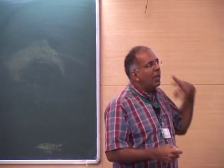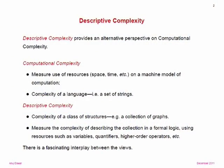In descriptive complexity we depart on two fronts. Instead of talking about some machine model of computation and resources, we measure complexity in some sort of formal logic. Our resources, instead of being space and time, are things like quantifiers, variables, and higher-order operators. We want to measure essentially how much of these you need to express a problem. And instead of talking about strings, we'll be talking directly about classes of structures.